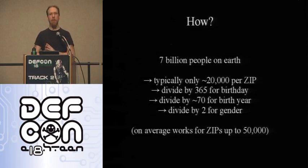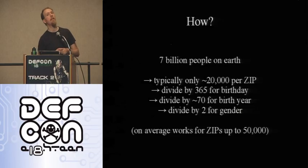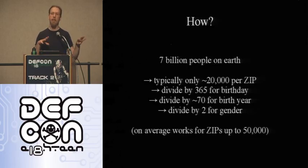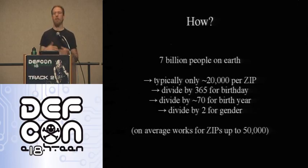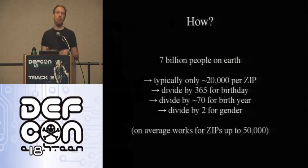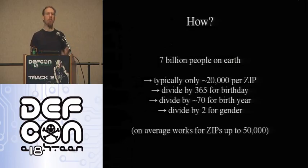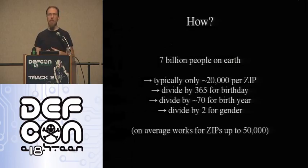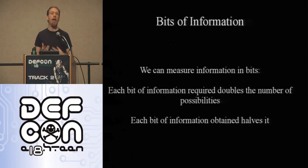That's counterintuitive, so let's see how it happens. If you start with 7 billion people on Earth, you rapidly narrow down to a group of about 20,000 to 50,000 people if you know a zip code. Then you divide by 365 because you know their birth date, divide by about 70 because you know their age, and divide in half because you know their gender. If the zip code had fewer than 50,000 people, you probably have a unique person.